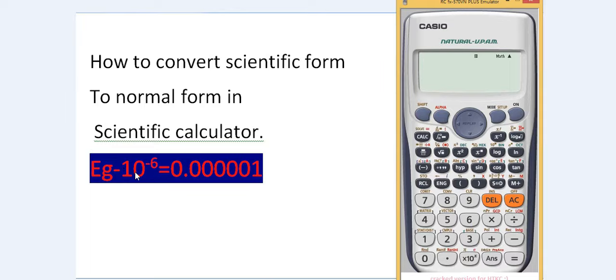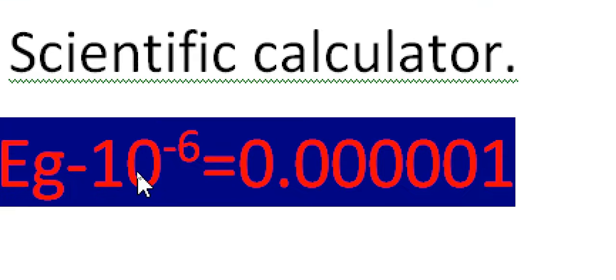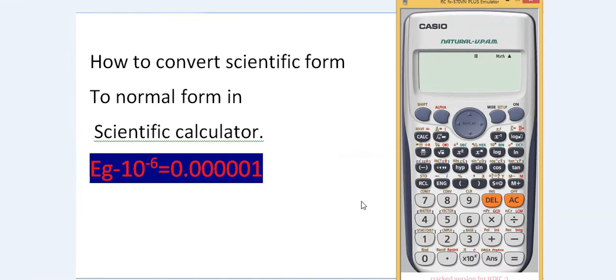First, let me show you one example. Let's press the number 10 raised to the power negative 6 on this calculator. Press 10 raised to the power negative 6, and then press the equals button. This gives us the normal fraction form.